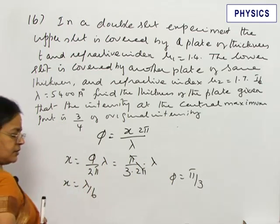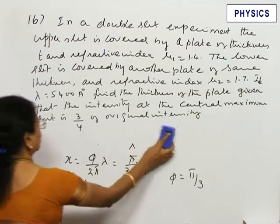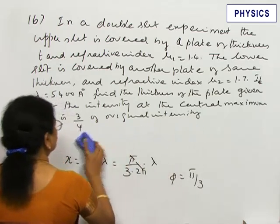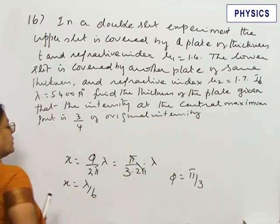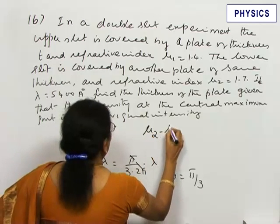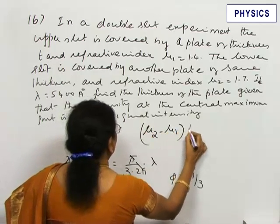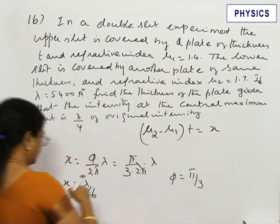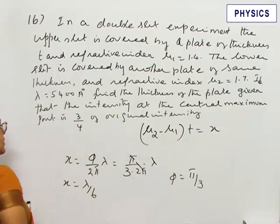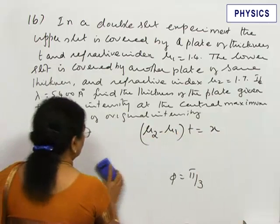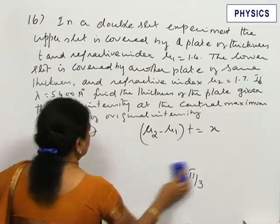What is the path difference when the two rays travel extra distance through the glass plate? It is (μ₂ - μ₁)t = x, the additional path difference. The phase difference comes because of the additional path difference.